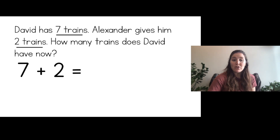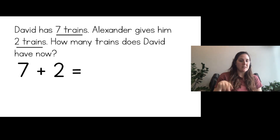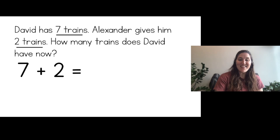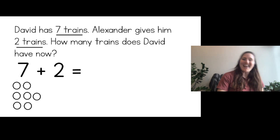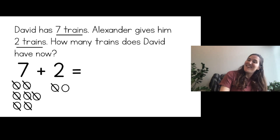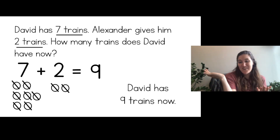We want to know what does that equal. Solve by drawing circles — seven plus two equals blank. First draw seven circles: one, two, three, four, five, six, seven. Then plus two: draw two more — one, two. Count them all together: one, two, three, four, five, six, seven, eight, nine. Seven plus two equals nine. So how many trains does David have now? David has nine trains now.